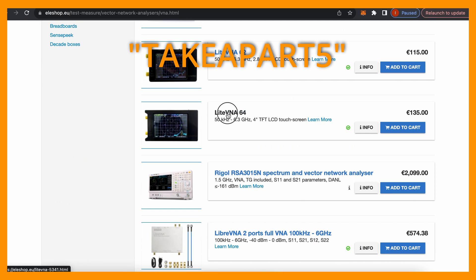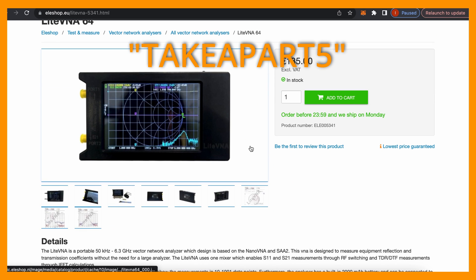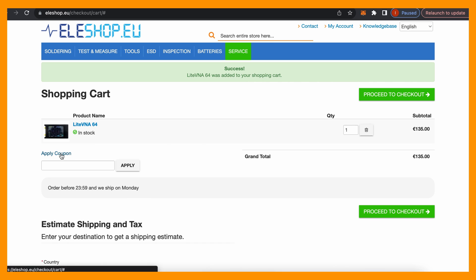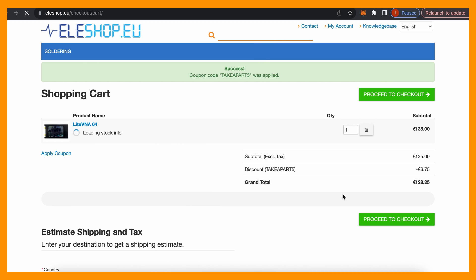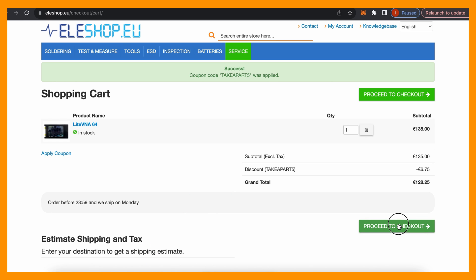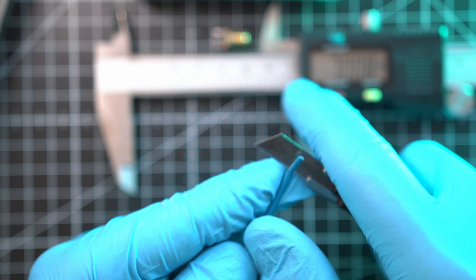And if you want to buy Light VNA, use code TAKERPART5 at checkout. First link in description. ELE Shop EU is an authorized reseller of NanoVNA and Light VNA devices.